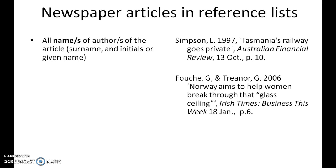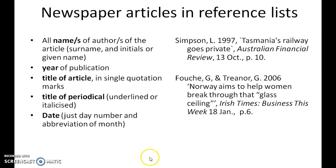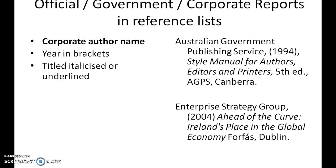For newspaper articles in a reference list, you need: all author names, year of publication, title of the article in single quotation marks, title of the newspaper italicized or underlined, the date — just the day number and abbreviated month, so '13 Oct' or '18 Jan' — and then the page numbers. There are slight differences when citing a magazine article, which you'll find in the supporting document.